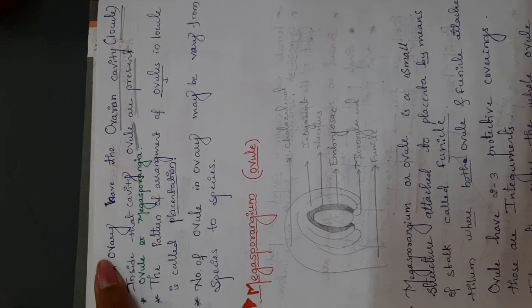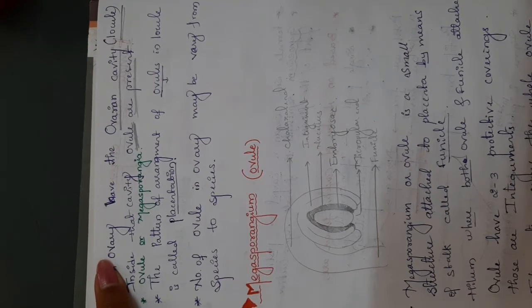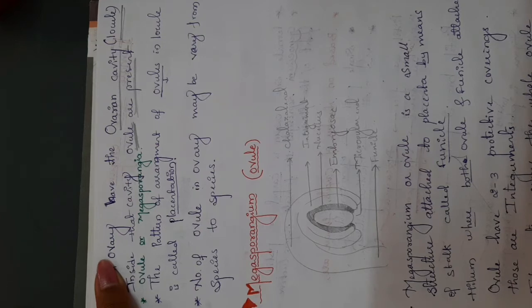Ovules are nothing but the megasporangium, and they are present in a locule. The pattern of arrangement of ovules in a locule is called as placentation.